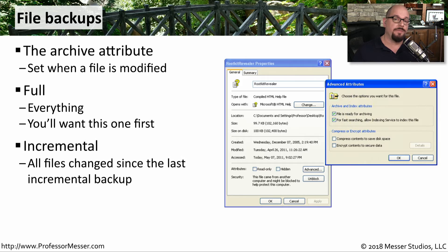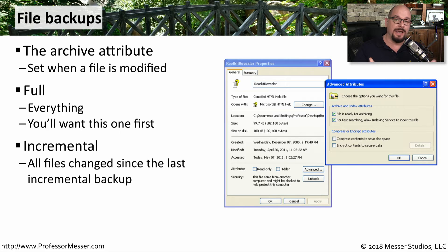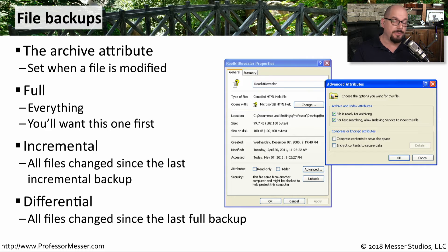This becomes useful if you're performing an incremental backup, which is going to grab all of the files that have that archive bit set since the last incremental backup. There's another type of backup called a differential backup, which will perform a backup of all of the files that have that archive bit set since the last time you did a full backup.